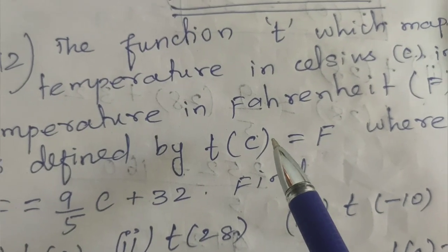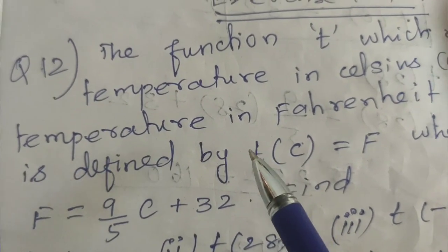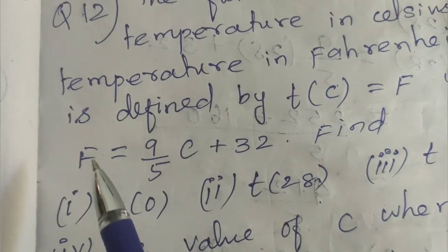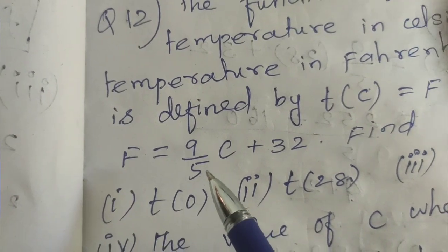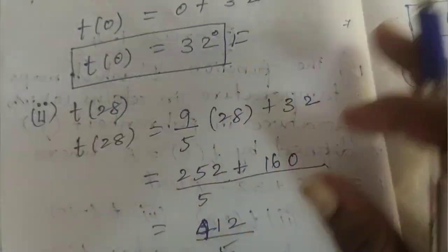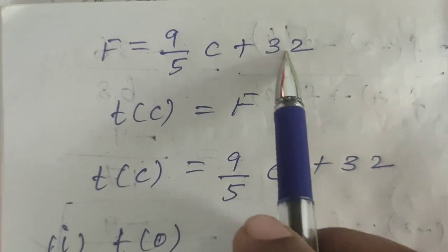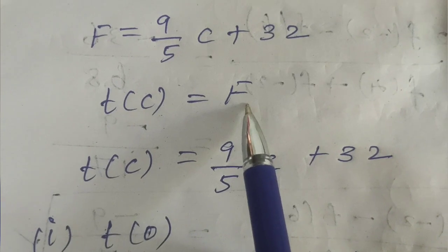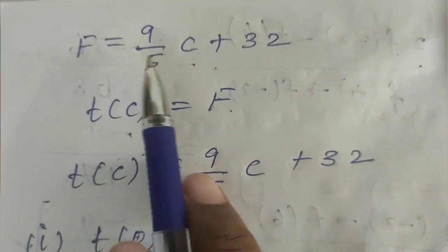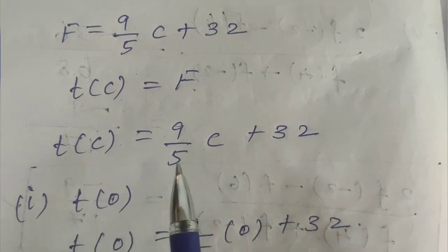In the temperature function T of C, the equation is T of C equals F, and F equals 9 by 5 times C plus 32. So the function is T of C equals 9 by 5 times C plus 32.